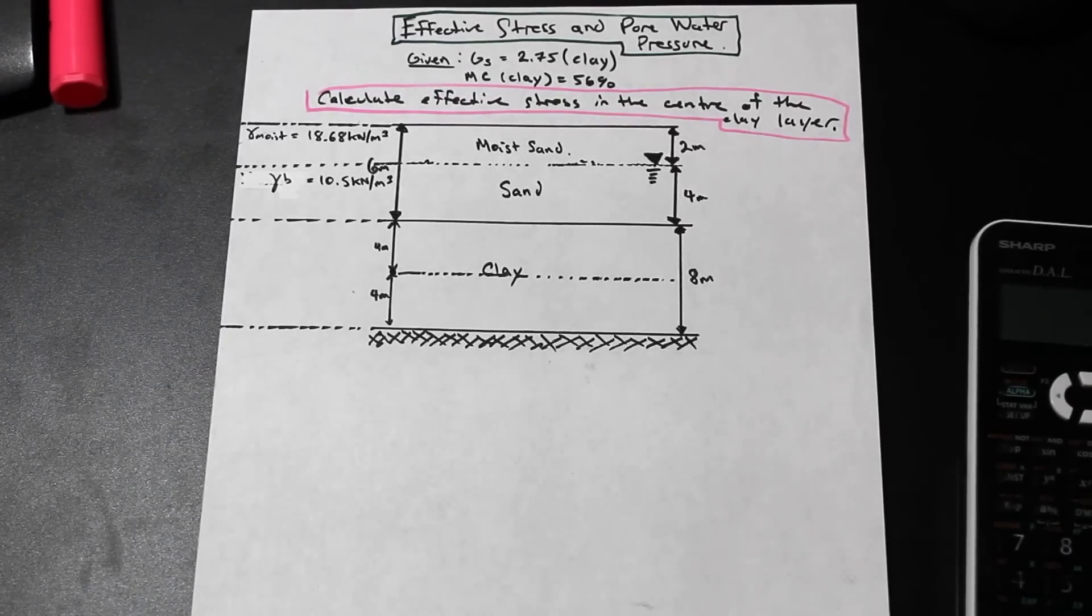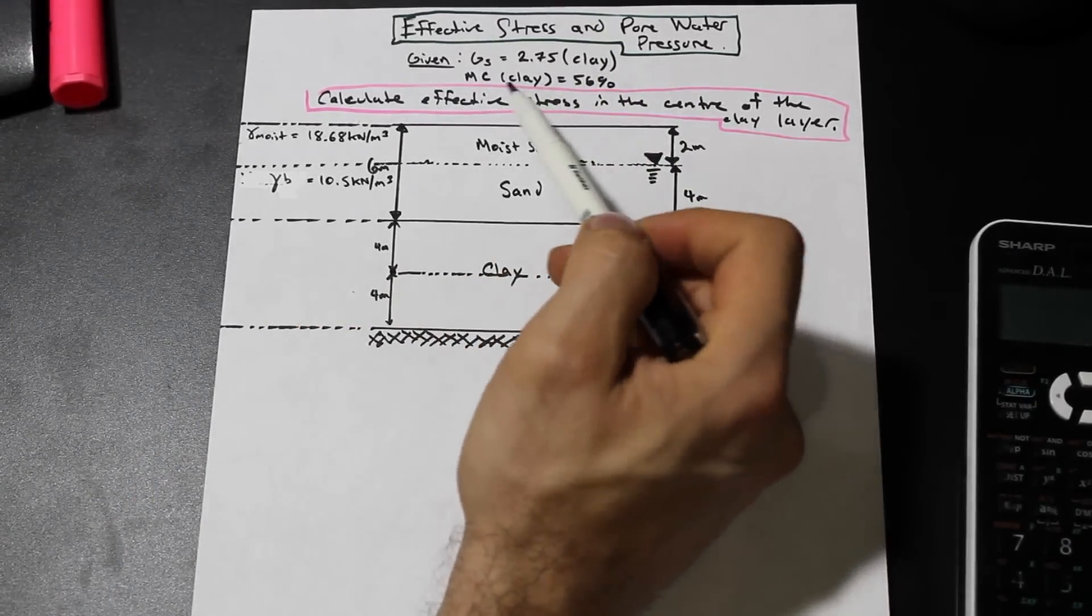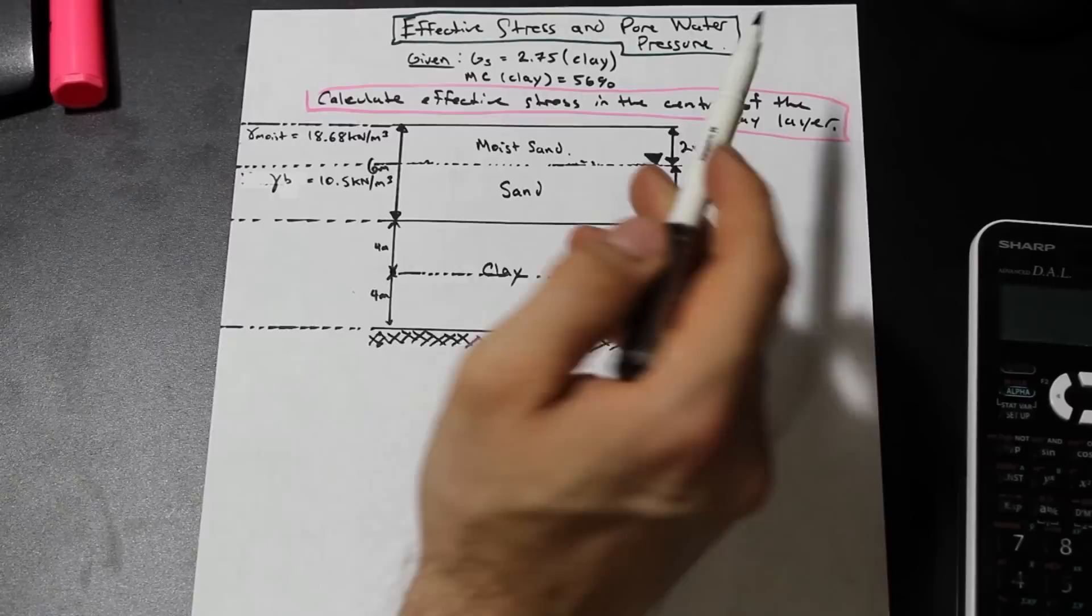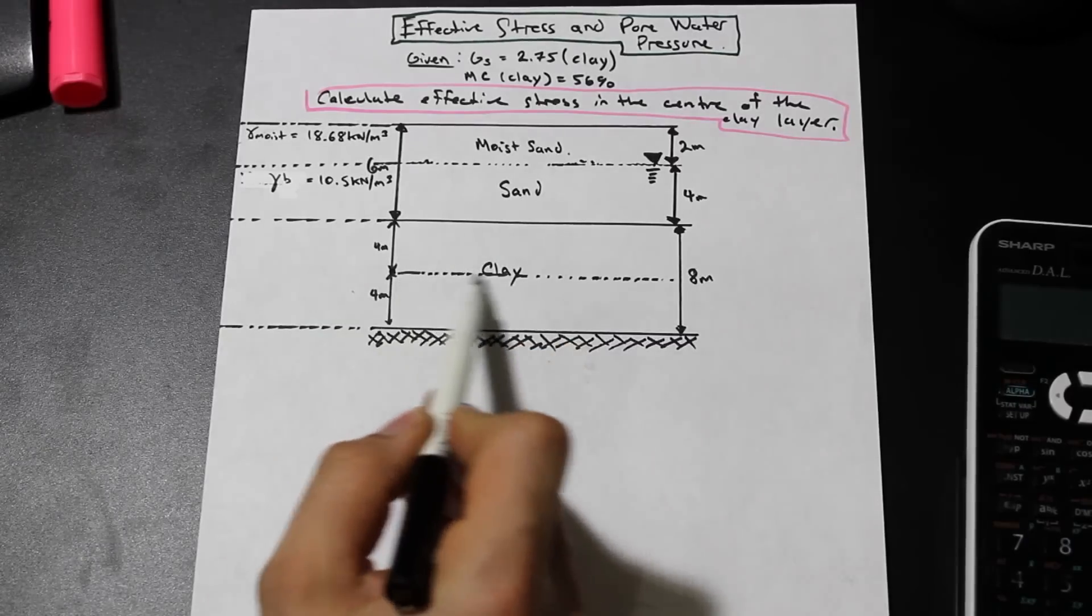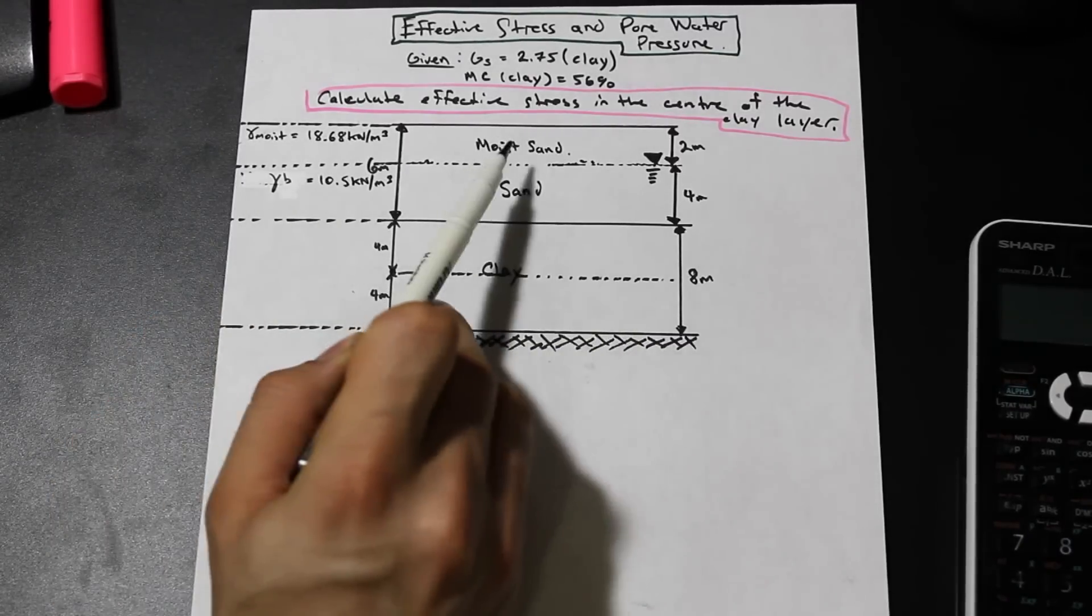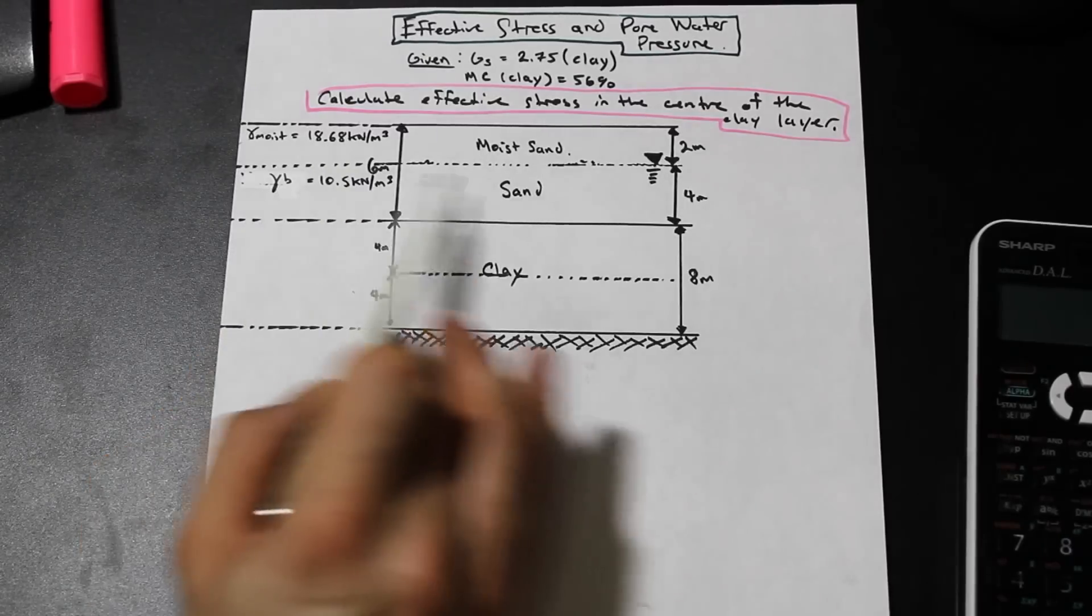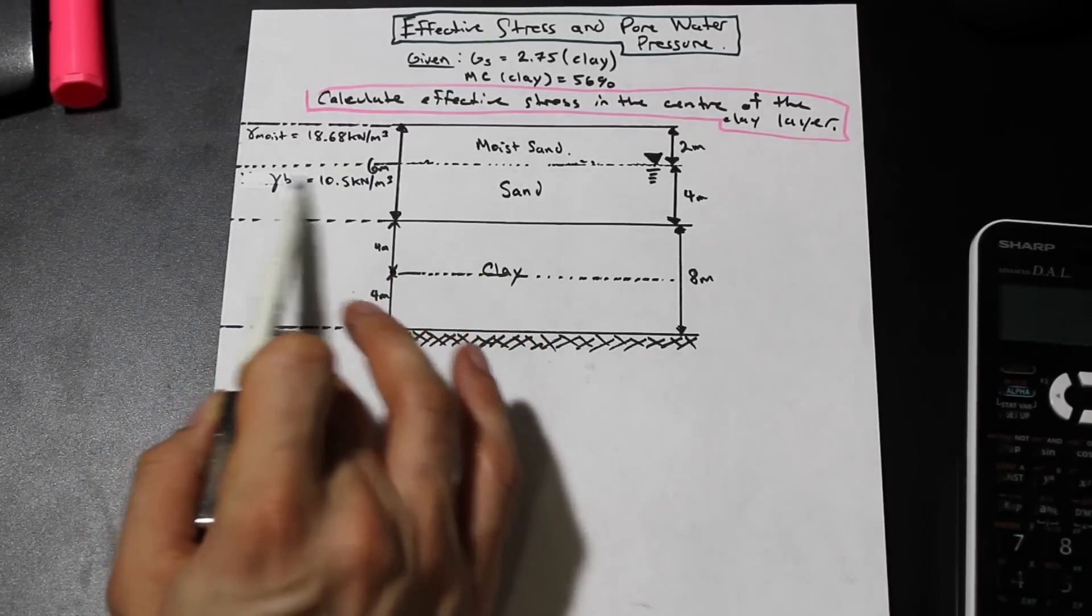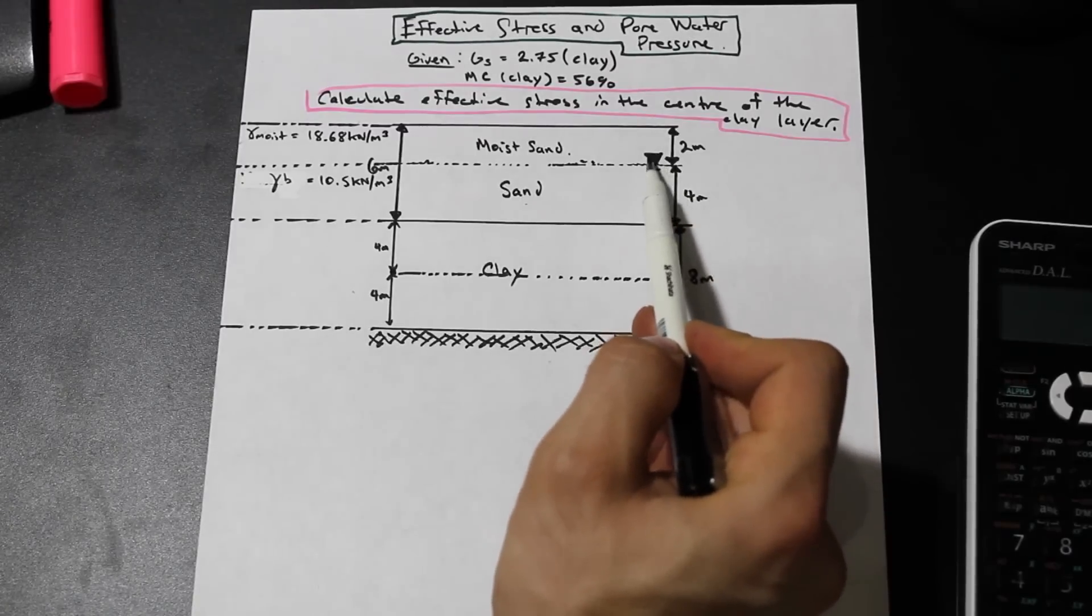It's not too hard. It could be a little bit tricky, but let's just go through this question. So we're given a couple things. We're given the specific gravity of clay, and we're given the moisture content of clay, and we're asked to calculate the effective stress in the center of the clay layer, so this dotted line here. This is moist sand, and we're given the unit weight for the moist sand. We're given the submerged unit weight or the bulk unit weight of the sand, and this is the water table here at 2 meters.